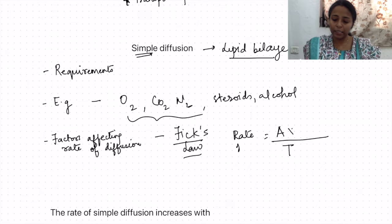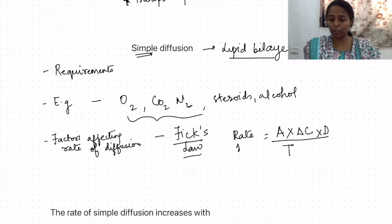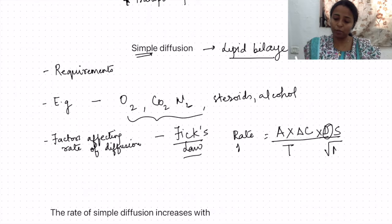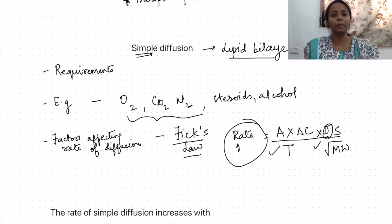Rate is also directly proportional to delta C (concentration gradient), or delta P for gases. There is a diffusion coefficient which represents solubility of the substance, divided by the square root of molecular weight. So the greater the membrane thickness or the larger the molecular weight of the substance, the lower the rate of simple diffusion.